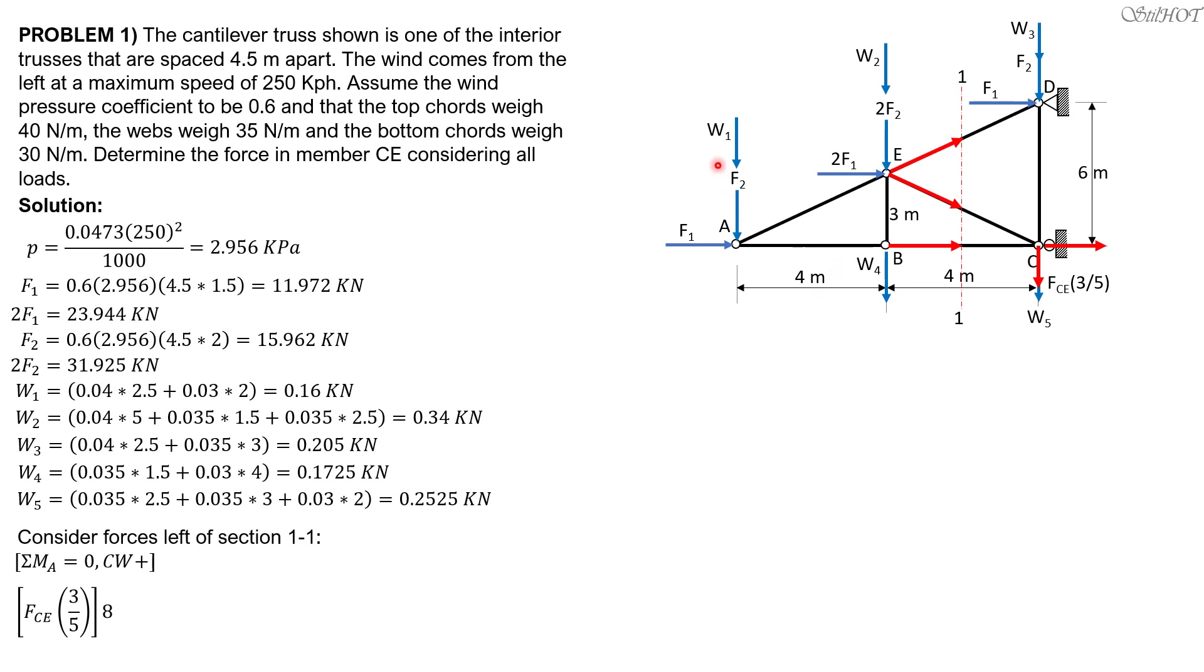Summation moment about A equals 0, clockwise as positive. So we have FCE times 3 over 5 times 8, the moment arm. Then here we have 2F1, which is 31.925, the moment arm is 3. Then plus, let's combine W2 to F2 and W4. W2 is 0.34 plus 2F2, 31.925 plus W4, 0.1725, then the moment arm is 4, equals 0. So FCE is negative 41.996 kilonewtons. So FCE is 41.996 kilonewtons compression. That's the force in member CE due to the loads shown.